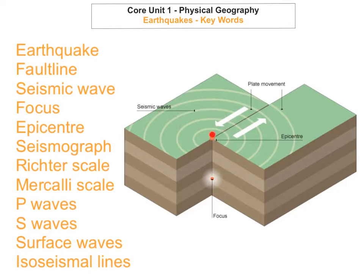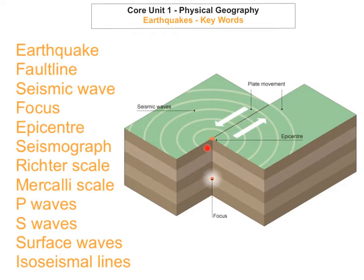The Richter scale is a way to actually measure earthquakes. It determines the magnitude of the seismic waves, and each unit increase on the scale means that the seismic waves are 10 times as large. So for example, if it was 7 on the Richter scale, the seismic waves would be 10 times larger than an earthquake that scored 6 on the Richter scale. So if one earthquake is 7 and another is 8, that means it's 10 times stronger.